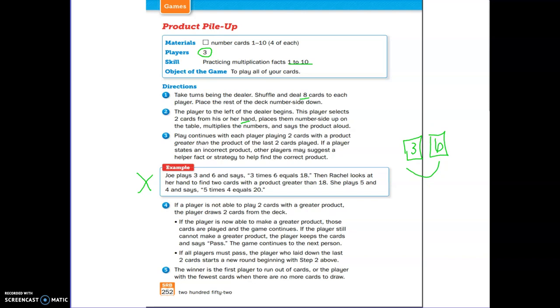The play continues with each player laying two cards with a product greater than the product of the last two cards played. If a player states an incorrect product, other players may suggest a helper fact or strategy. Here are Joe's cards, 3 and 6. He multiplied them and says 3 times 6 equals 18. Then Rachel looks at her hand and finds two cards with a product greater than 18. She plays and lays down 5 and 4 and says 5 times 4 equals 20.